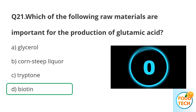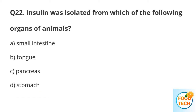Answer D. Biotin. Question 22. Insulin was isolated from which organ of the animal? A. Small intestine. B. Tongue. C. Pancreas. D. Stomach.